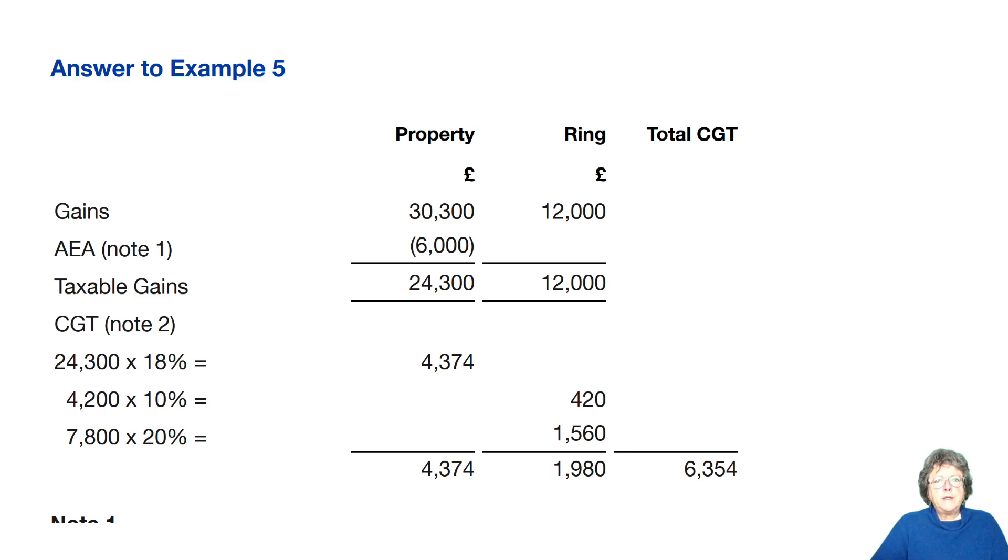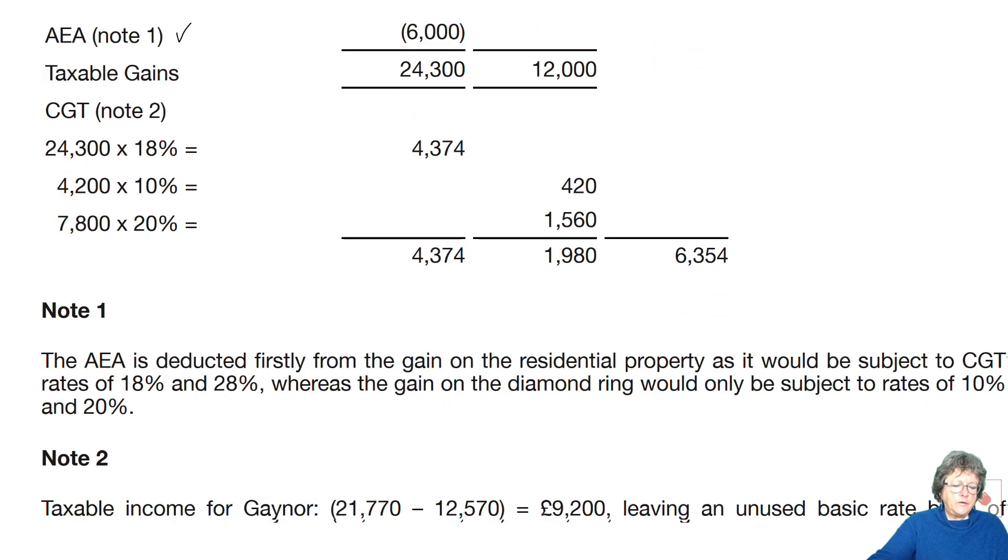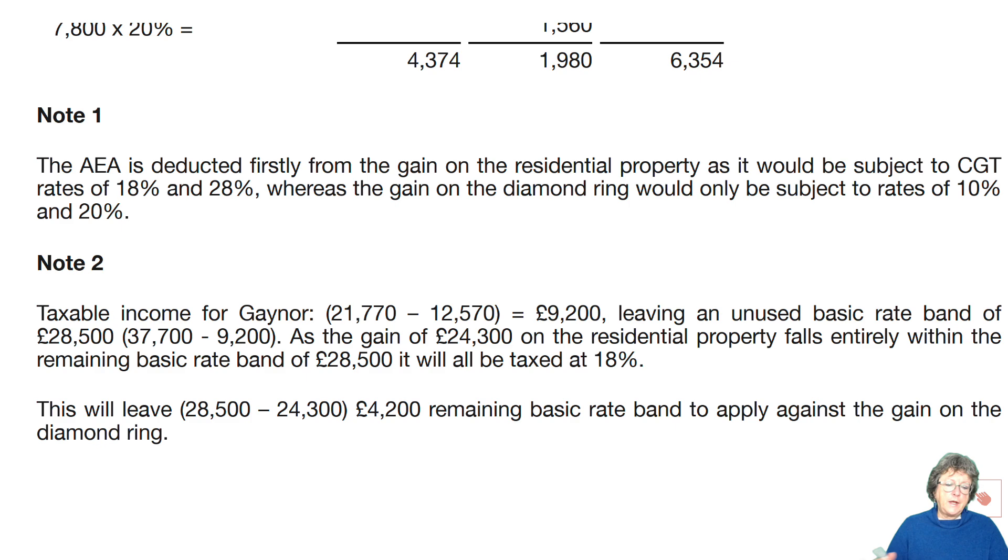So let's have a look at the model answer shall we? So because the property is being taxed at a different rate it needs to go in a separate column because property, residential property, is taxed 18 and 28 percent. So we have two different columns here just to make it easier. So we've copied out the question and we have put the annual exempt amount against the largest gain, the one that's going to be taxed at the largest amount. Then we need to work out the income tax position again, the same sort of thing.